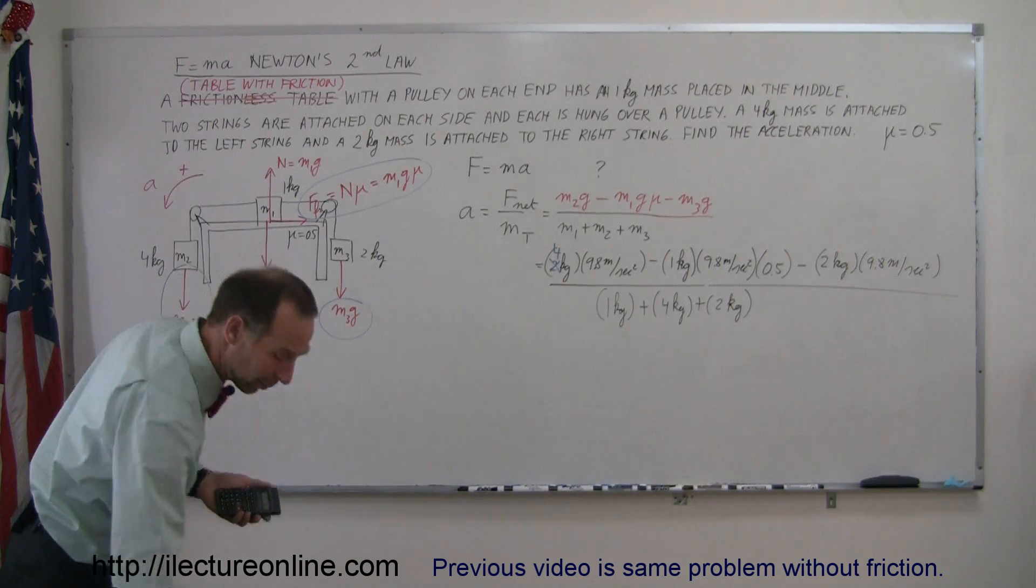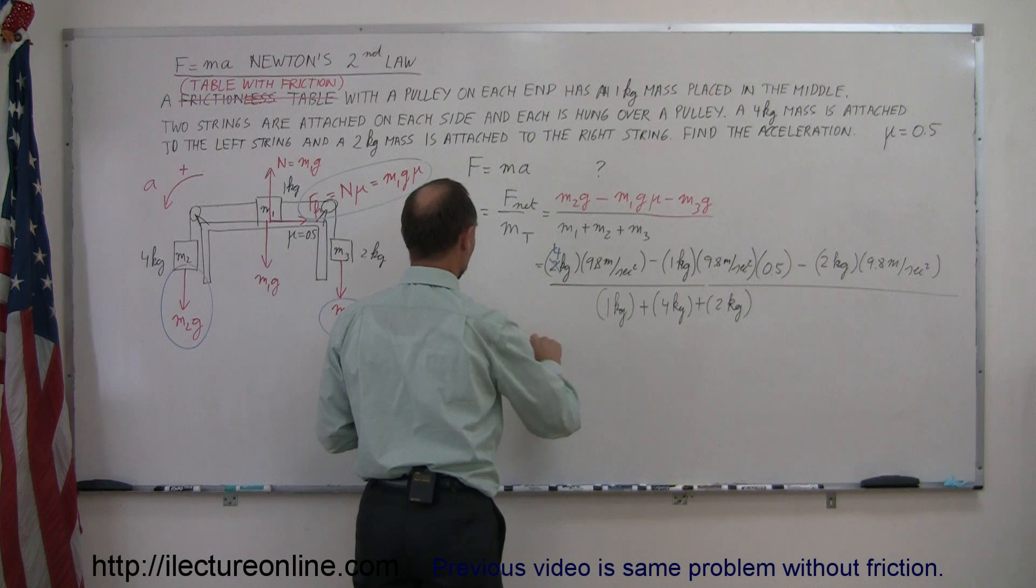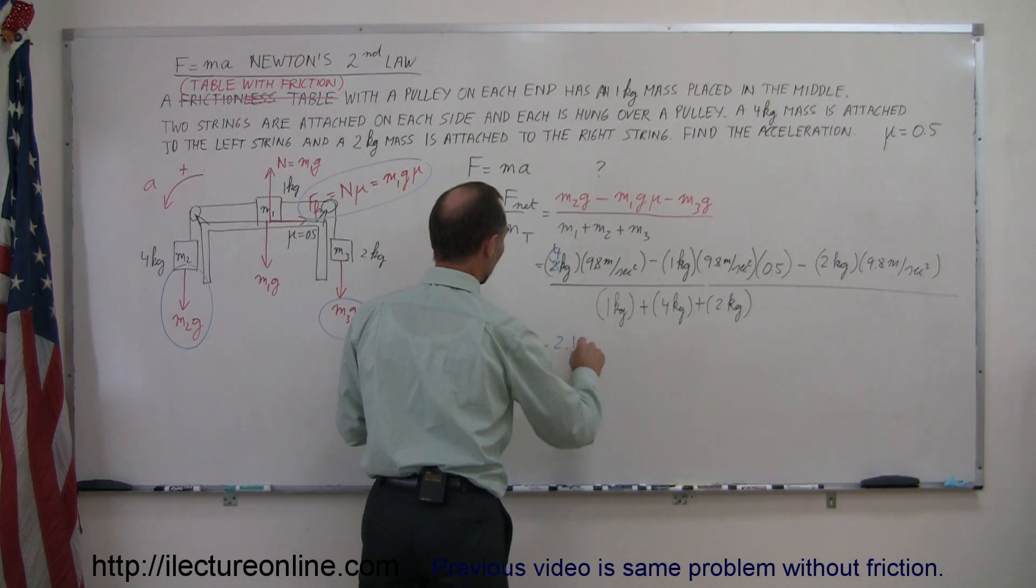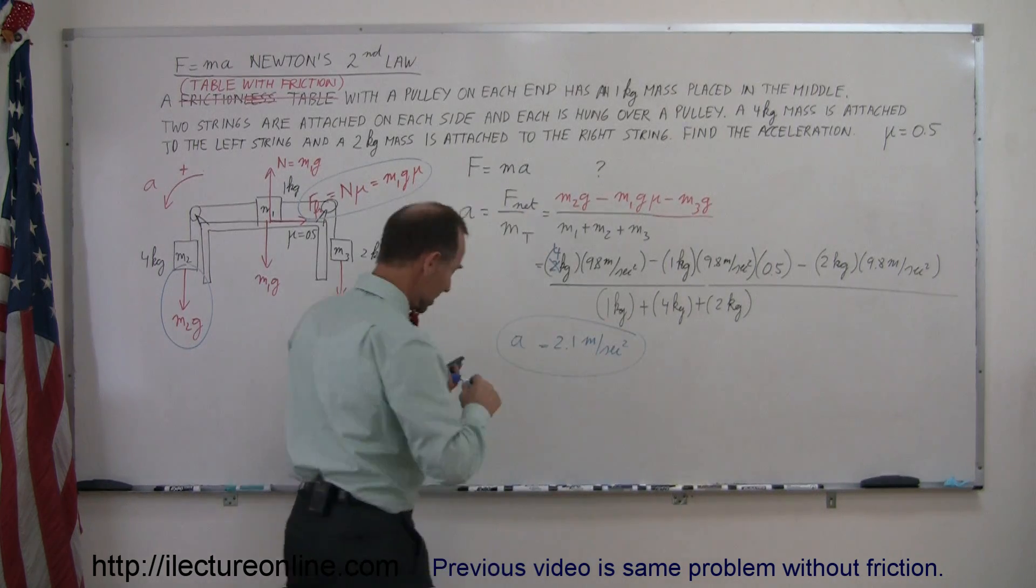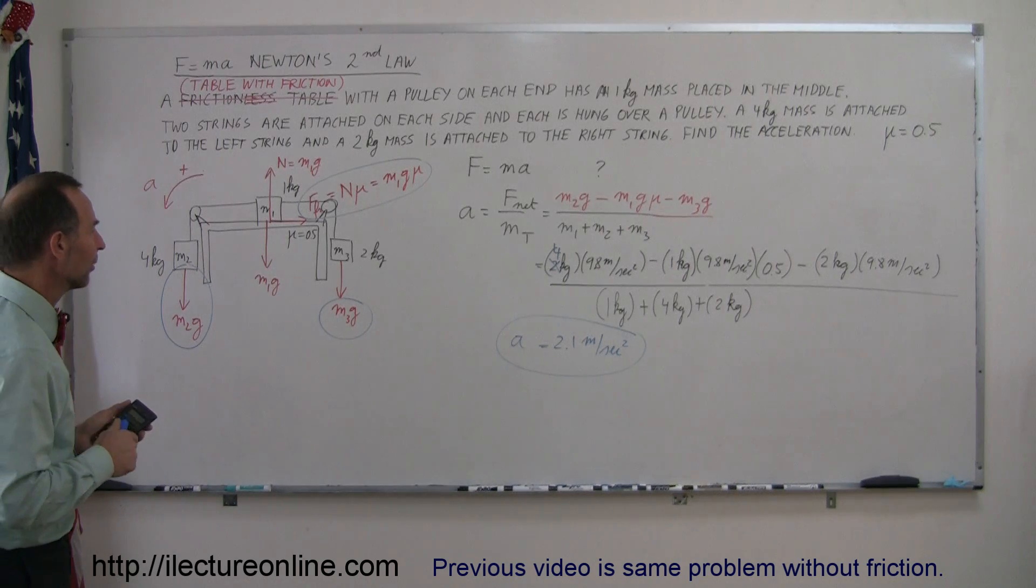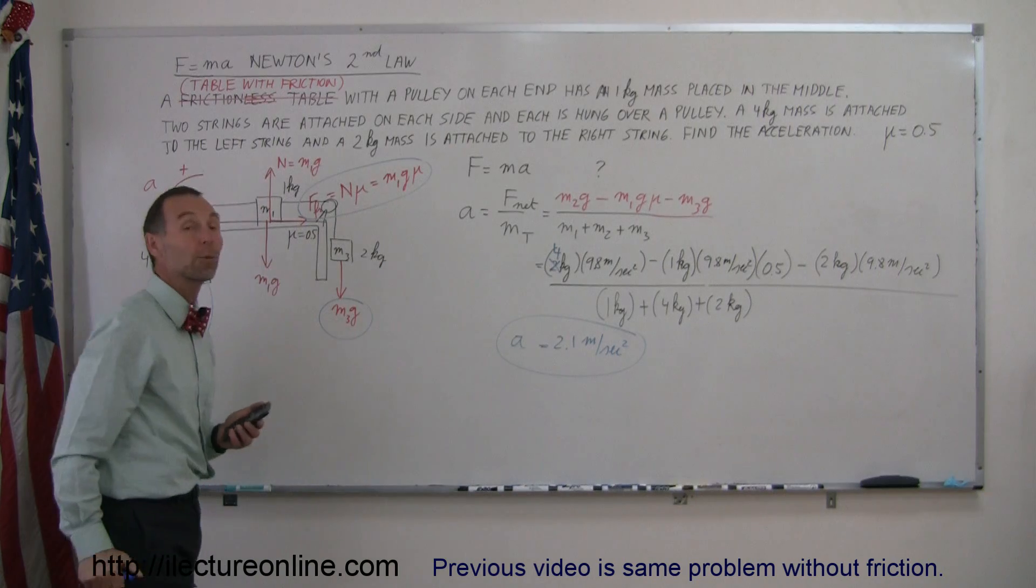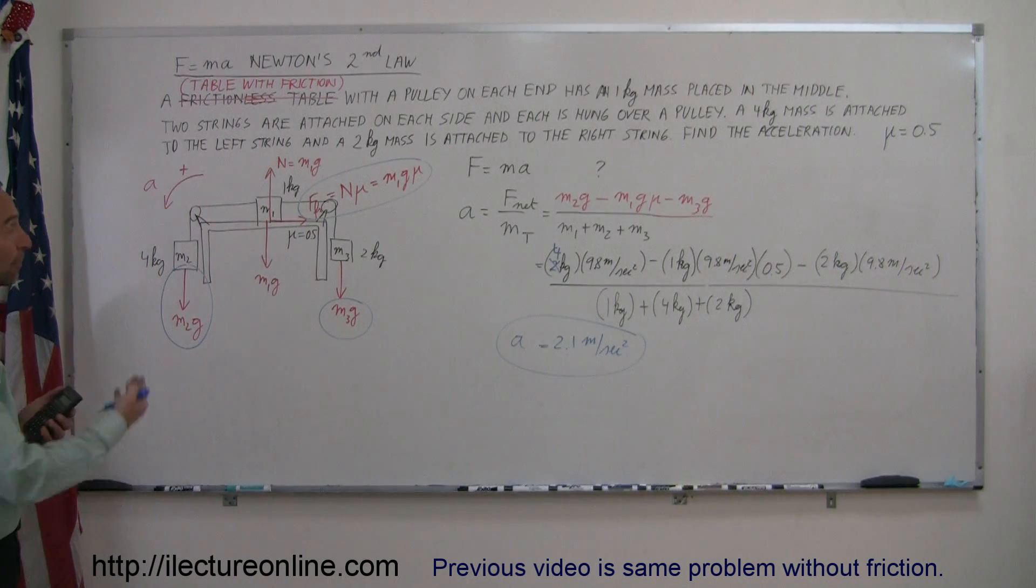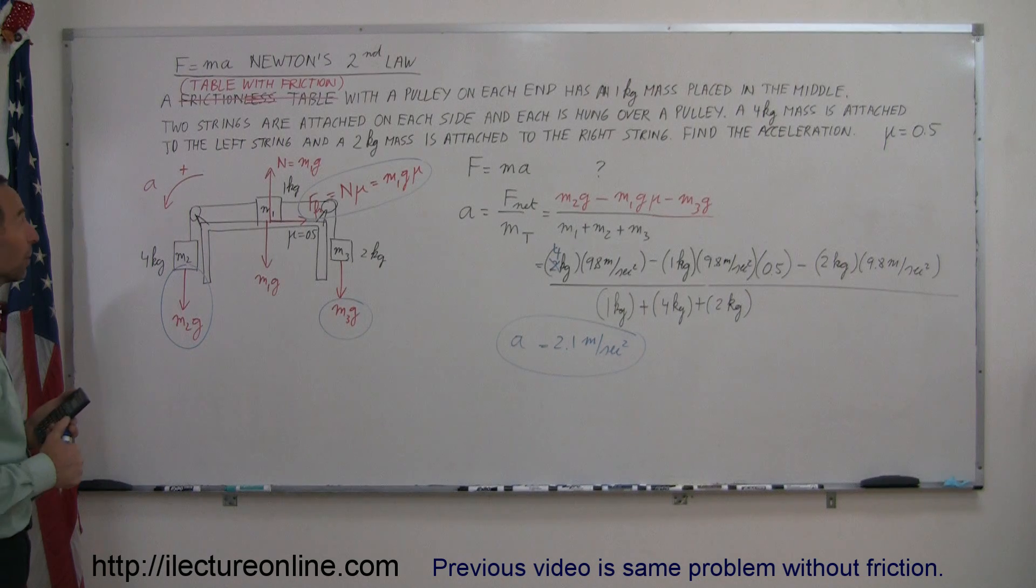In this case, the acceleration is going to be a little slower. Acceleration equals 2.1 meters per second squared. If I remember right, the answer before was a little bigger. So with the additional friction force to overcome, we end up with a slightly slower acceleration for the whole system. That's how you do something like this with friction. We'll show you many more of these types of examples because there are many different ways this can be applied.